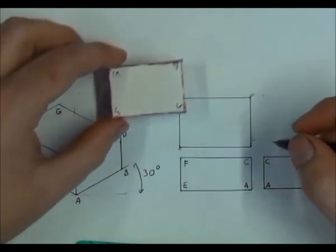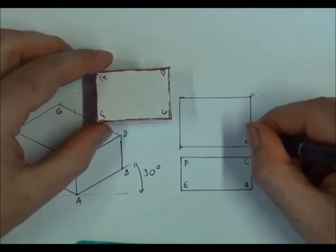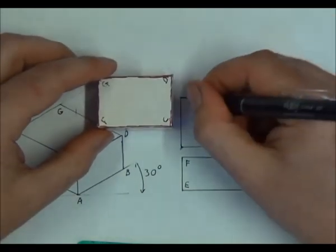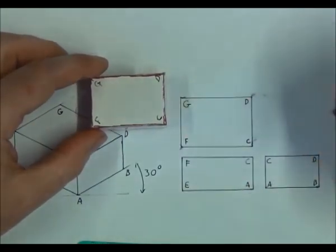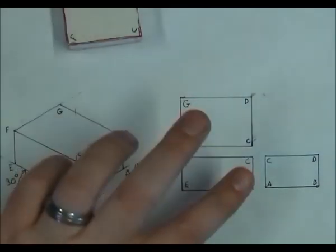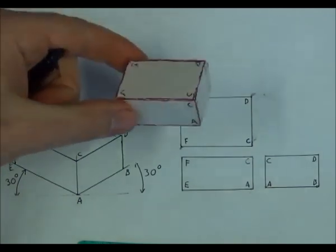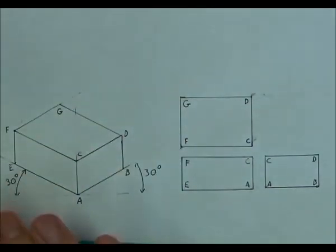In the top view we have corners C, D, G, and F. So there we have a basic orthographic drawing of this three-dimensional object. On the left we have the isometric, and on the right we have the orthographic.